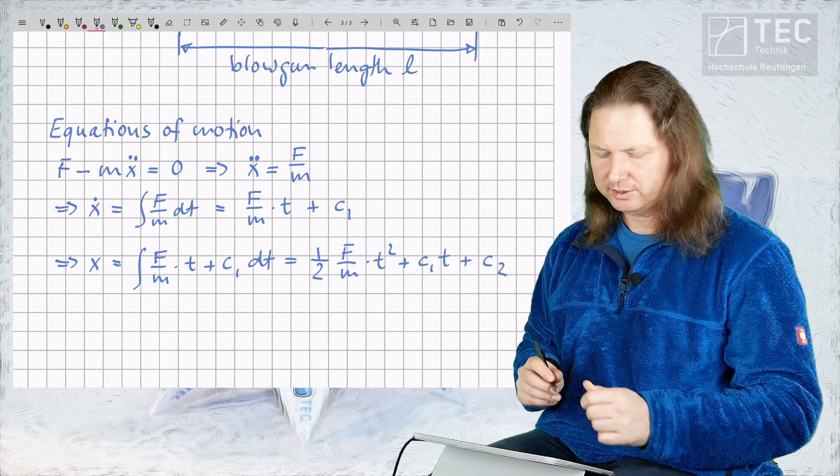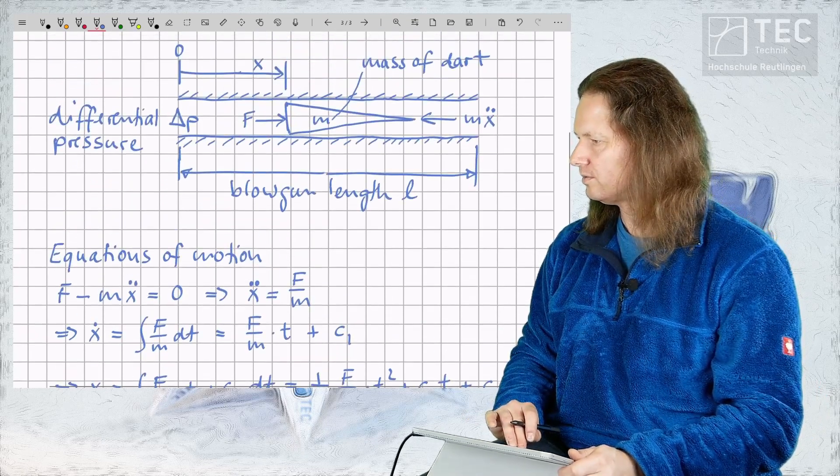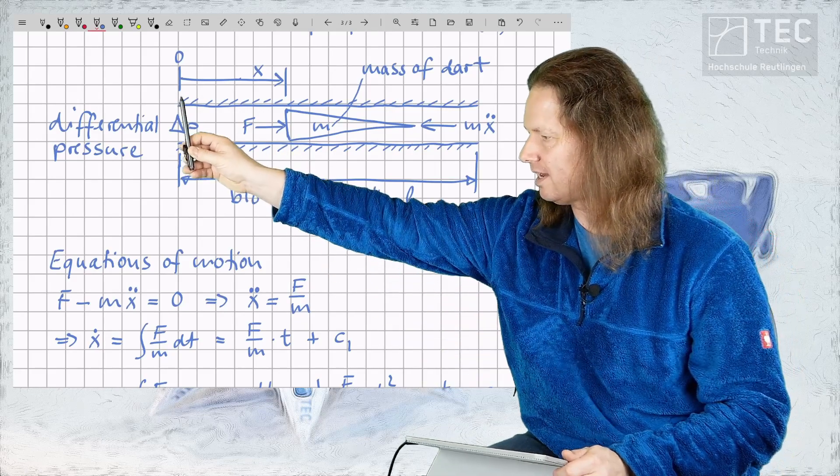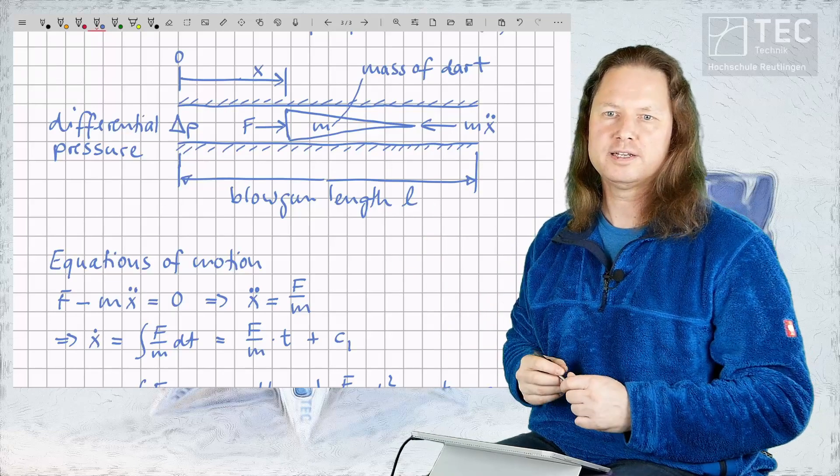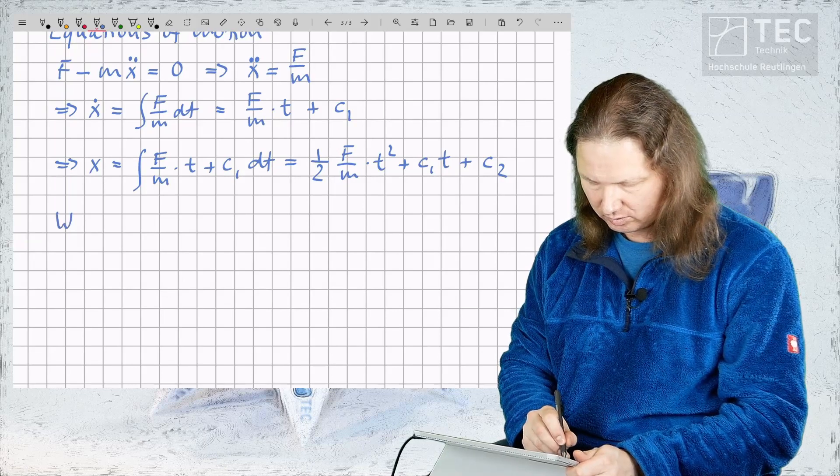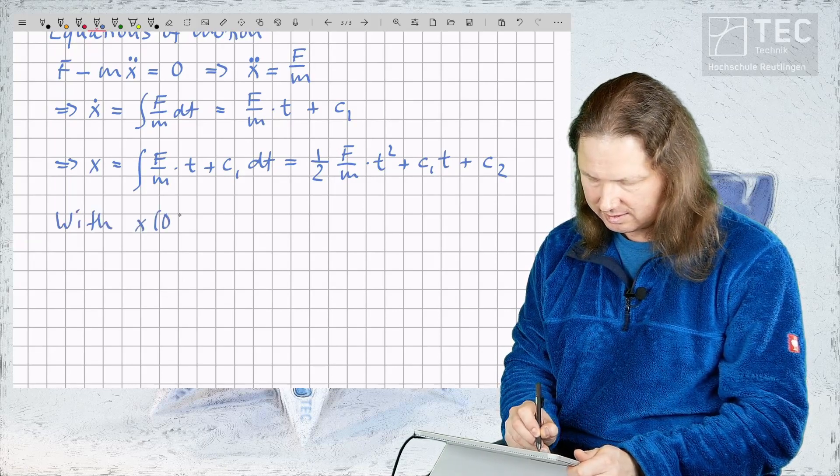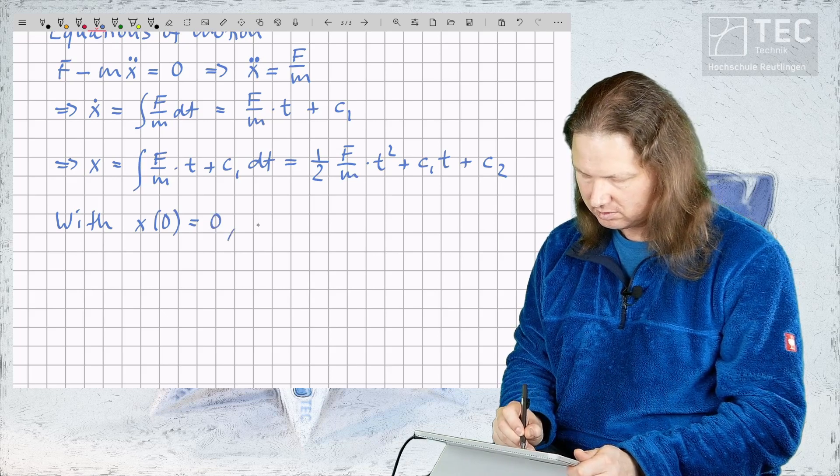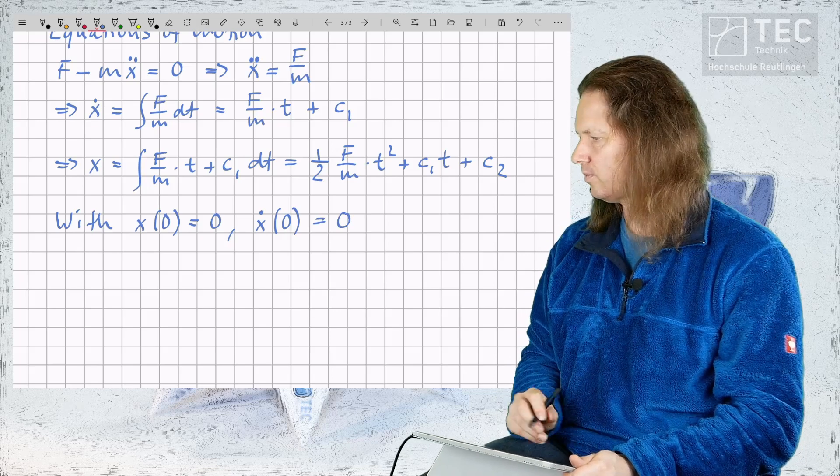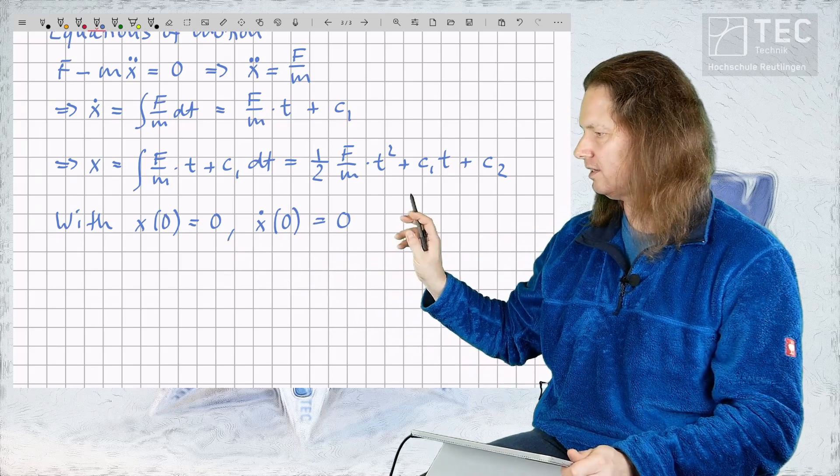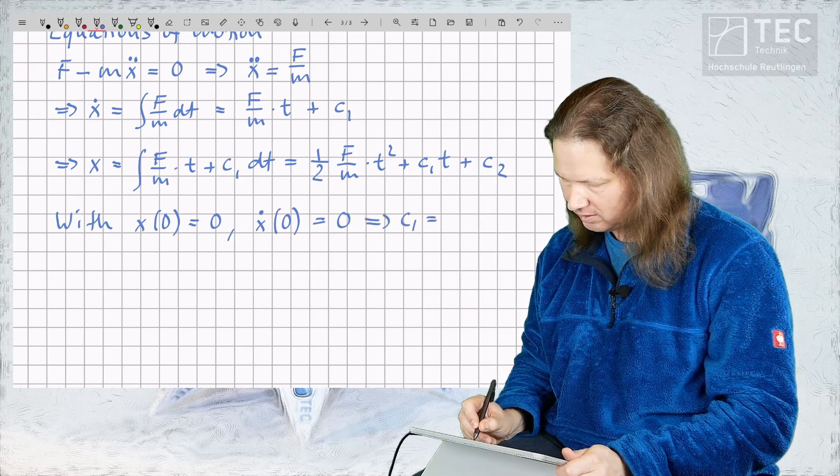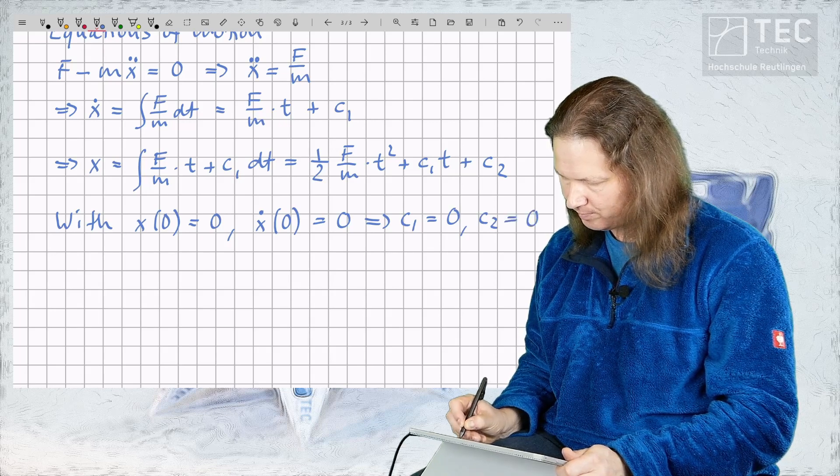Now we apply our initial conditions which are as follows. At time t equal to zero our dart is positioned at x equal to zero and it is at rest, that is its speed, its velocity is zero. So therefore we have x at t equal to zero and x dot at t equal to zero is zero and with these two initial conditions you can easily calculate the values of c1 and c2 to be c1 is zero and c2 is zero.